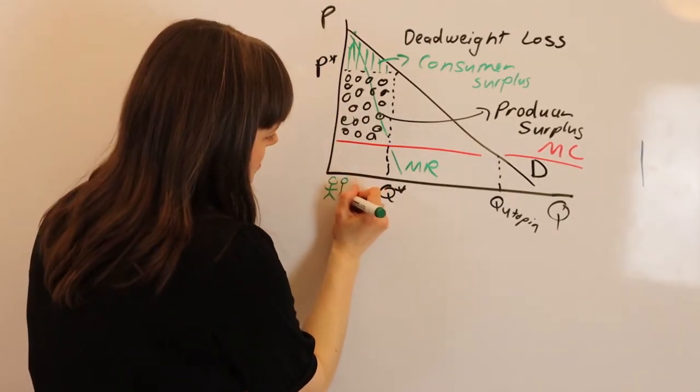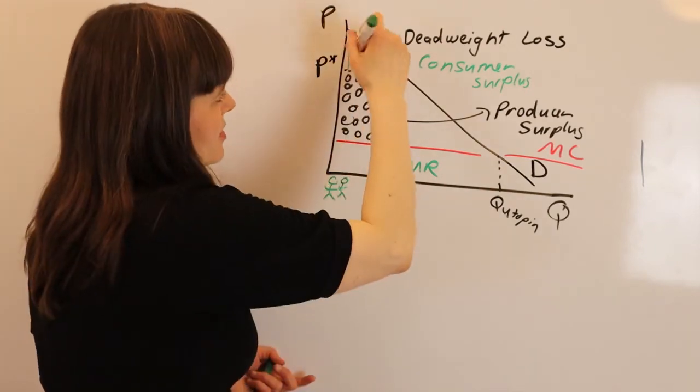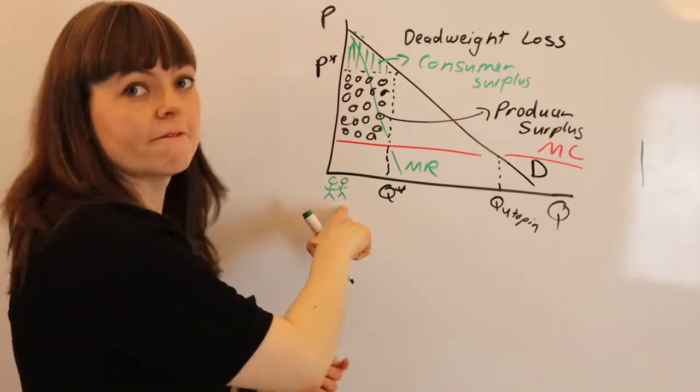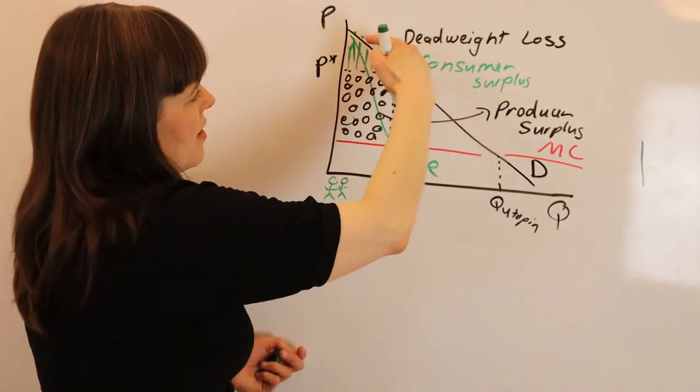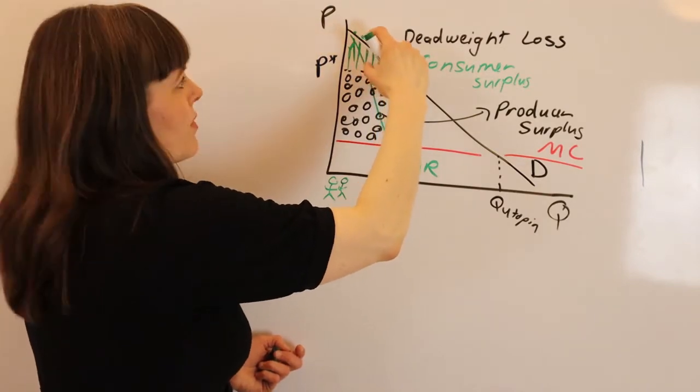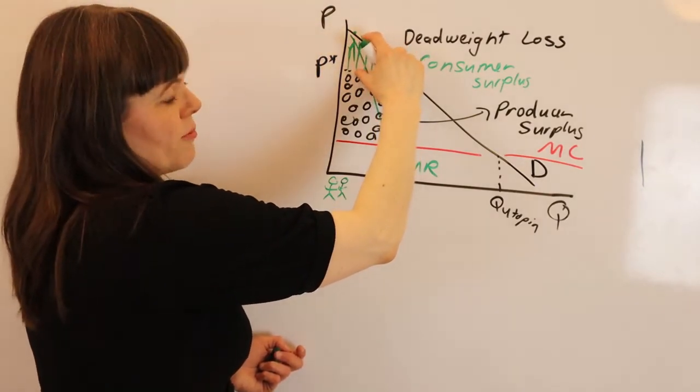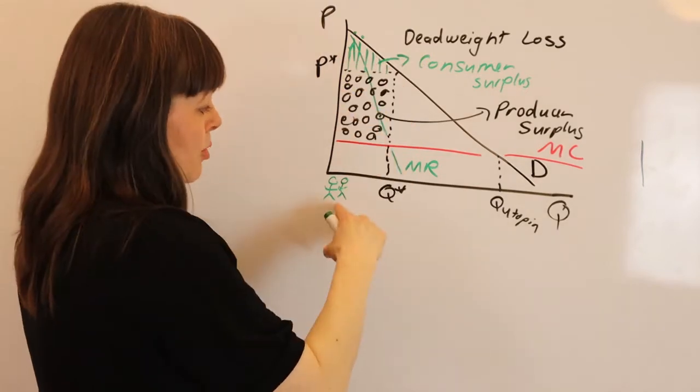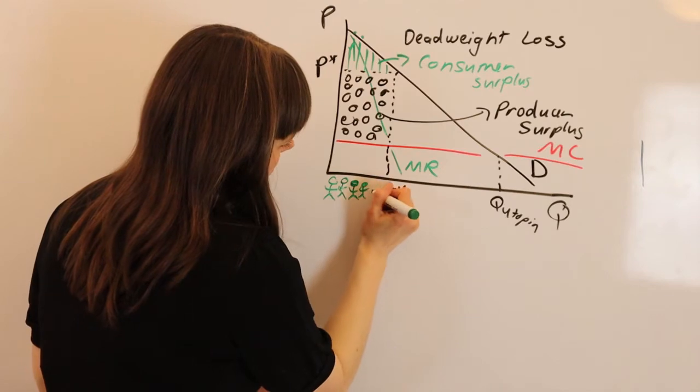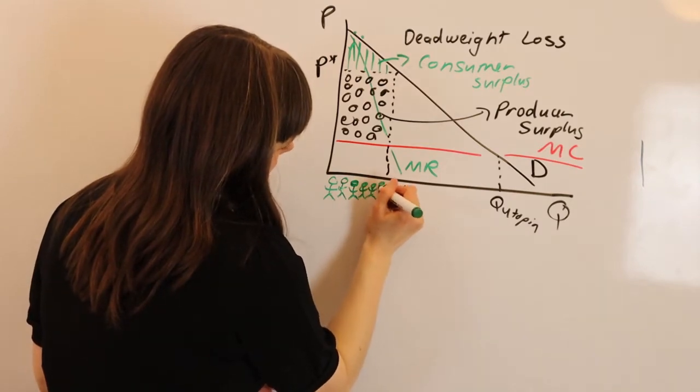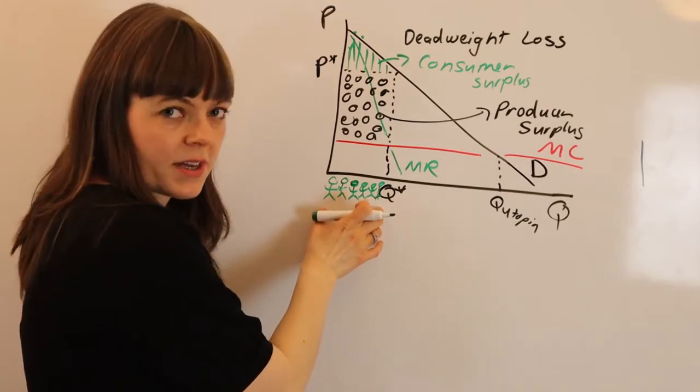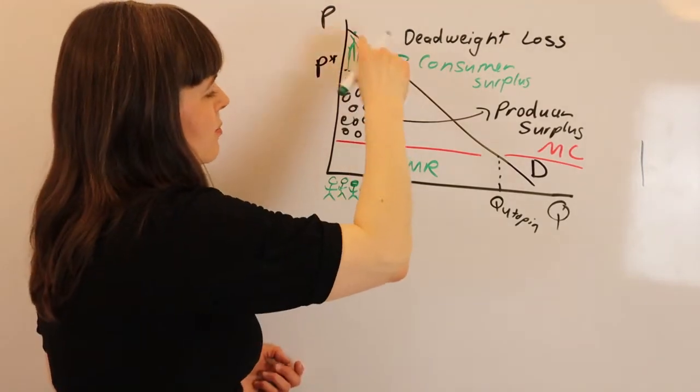There's a person lined up next to them, represented here on the demand curve, where this represents their value for the product. They are paying less than they value the product, so that difference is this person's surplus. We know all of these people are purchasing products, all the way up through Q*. So we add up the surplus for each of these people to get the consumer surplus.